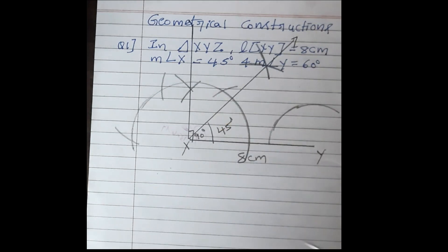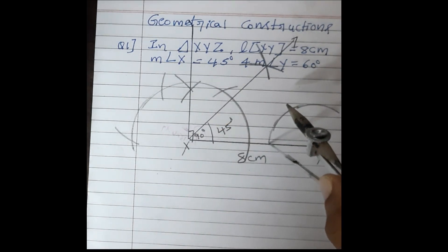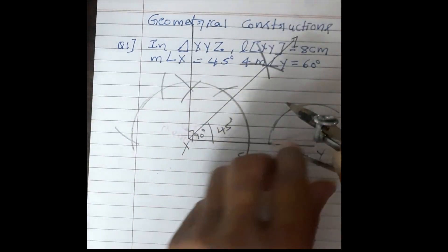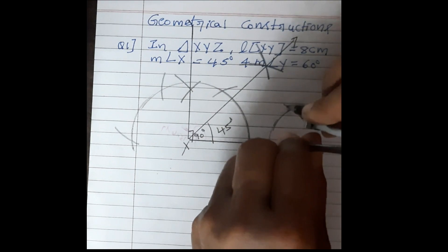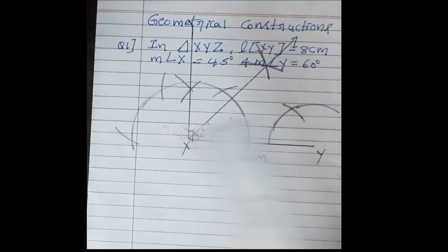Afterwards, we should not change any measurement. Here, we have to keep our compass and we have to cut the arc. Now, this is 60 degrees.